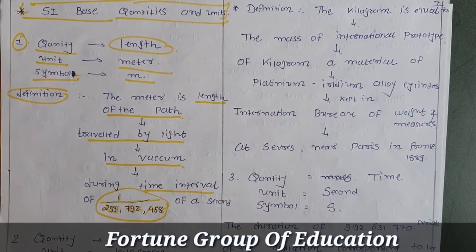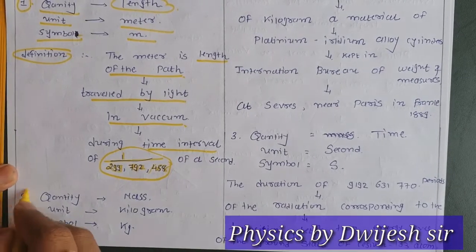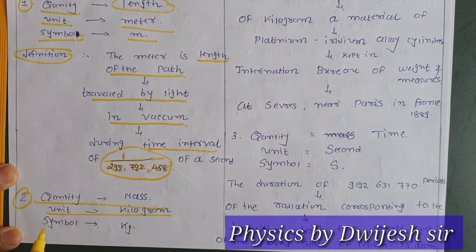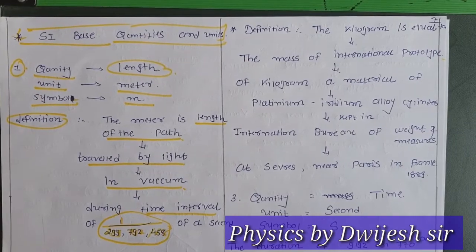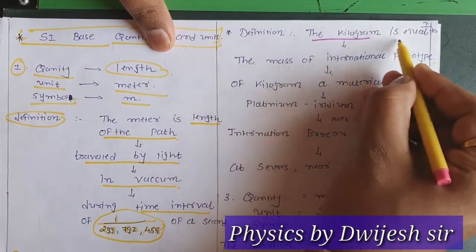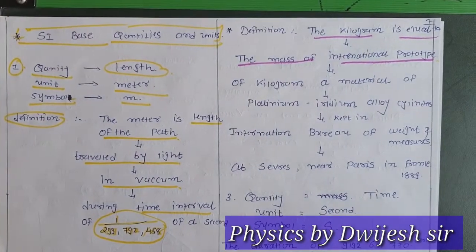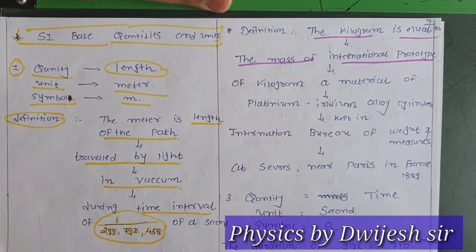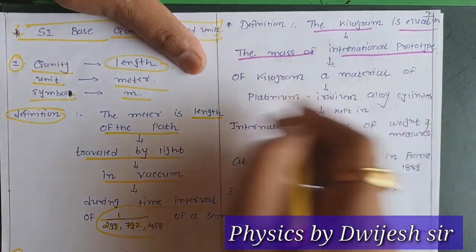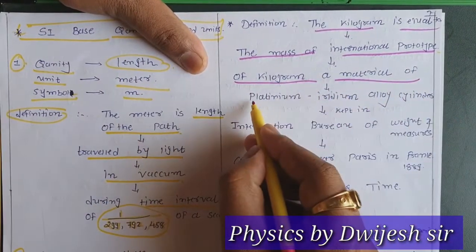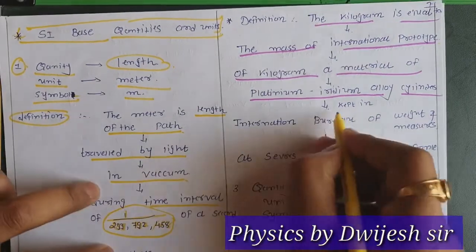The second base quantity is mass. The unit is kilogram and the symbol is kg. The definition of kilogram: a kilogram is equal to the mass of the international prototype. A prototype is a model made before production. The international prototype of the kilogram is a material made up of a platinum-iridium alloy cylinder.